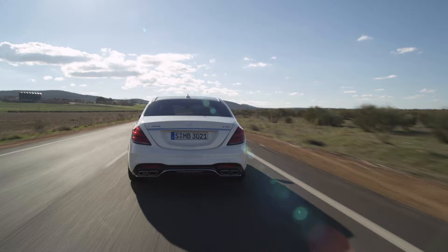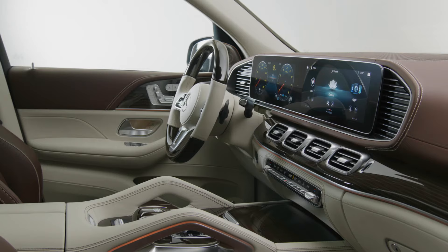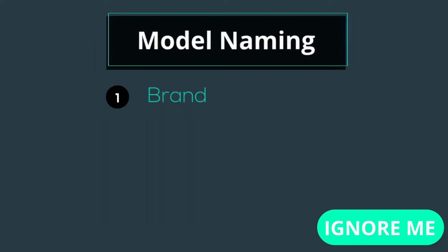If you've ever sneaked over to your neighbor's car to see what model it is but were overwhelmed with a bunch of numbers and letters — this time, you won't be. Almost all Mercedes car names have three different parts: the first is the brand name, so it's either Mercedes-Benz, AMG, or Maybach. The second part is the class name, and the third one is the number that indicates which engine the car has — more on that later.